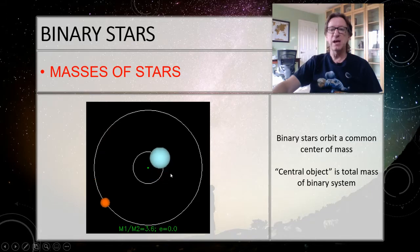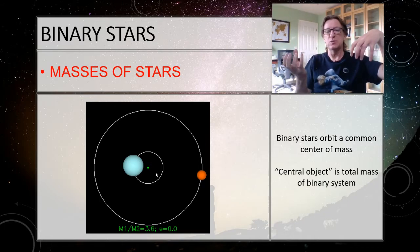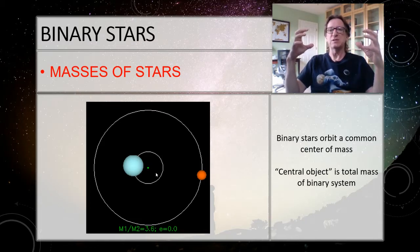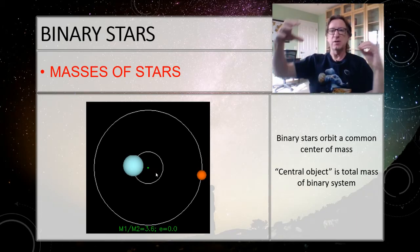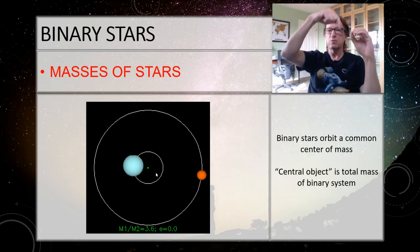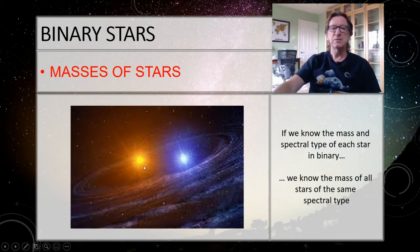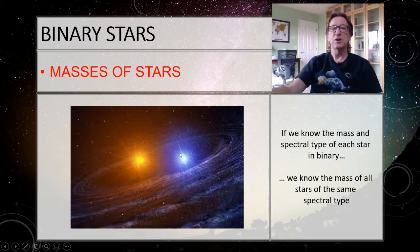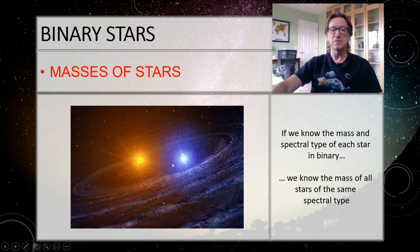Binary stars actually orbit a common center of mass — they're not so much orbiting each other as orbiting the center point between them. Think of a barbell: if you have equal weights on each side and spin it, it rotates around its center. But if one end has less weight, it gives a lopsided rotation around the center. Since both stars are rotating around that center, the central object's mass is the sum of their masses. Then if I know the total mass and can classify the stars by spectral type, even singleton stars of that type will have the same mass.